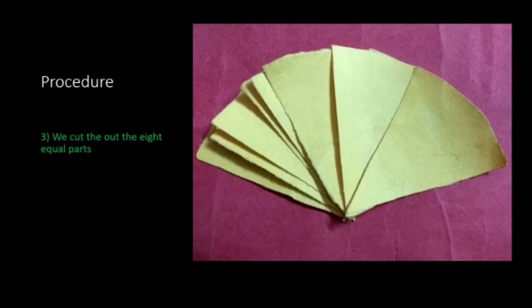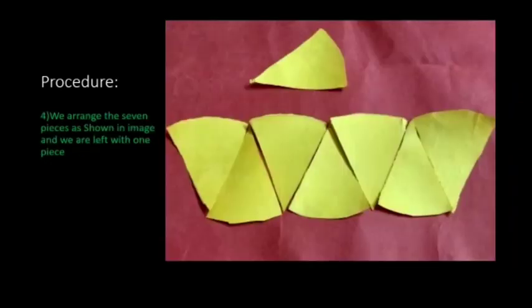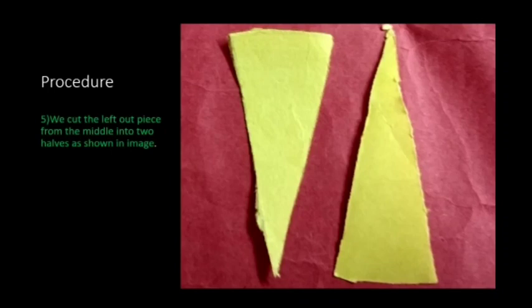Our next step is we have to cut out the circle into eight equal parts. The fourth step is we have to arrange the pieces as shown in the image.